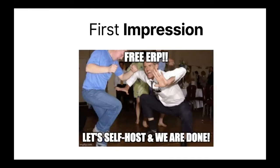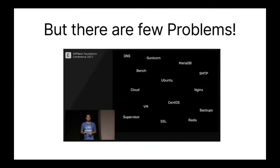For any app solution there are many moving parts which need to be taken care of. This is a snippet from an earlier presentation by Roshan: when you say self-hosting of an ERP solution it's not that simple. You have to figure out which OS — Ubuntu, which Ubuntu, Linux, CentOS — you have DNS problems, you need to handle bench, SSL, Supervisor going up and down all the time, Nginx problems, MariaDB problems — so many moving parts.